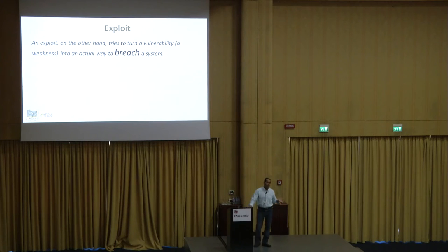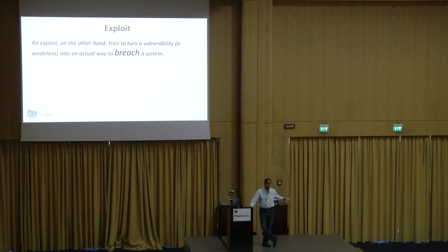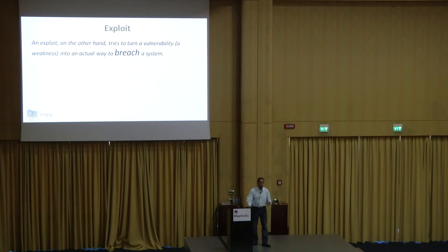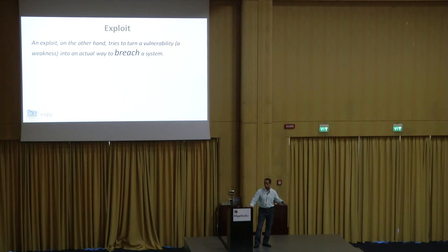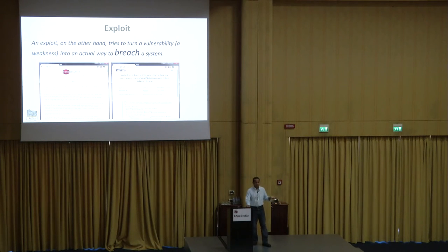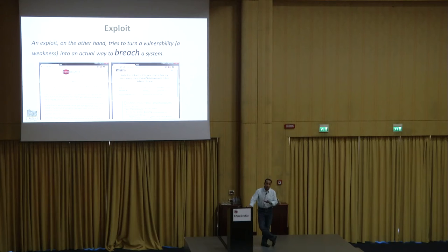So we saw what a vulnerability is — what's an exploit? An exploit is basically a proof of concept. A vulnerability exists in Adobe Flash — there is a report, there is a patch. An exploit is a proof of concept code, an executable — something that makes use of that vulnerability to get into an application. This is the exploit for that same vulnerability in two of the open-source exploit databases.